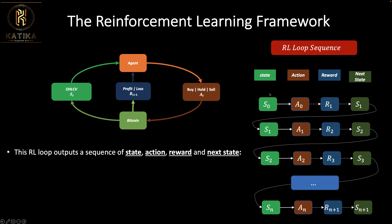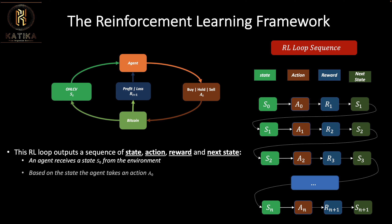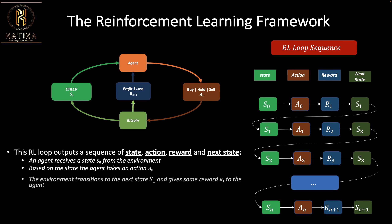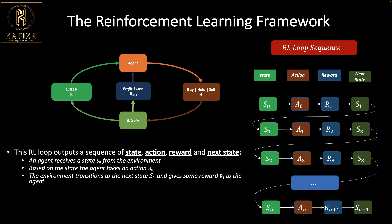In every looping sequence: based on the current state we take an action, based on that action we get a reward, then we move to the next state. We have so many of these loops which form the full reinforcement learning sequence. An agent receives a state from the environment, takes an action, gets a reward, and transitions to the next state. This process repeats itself until the last state.